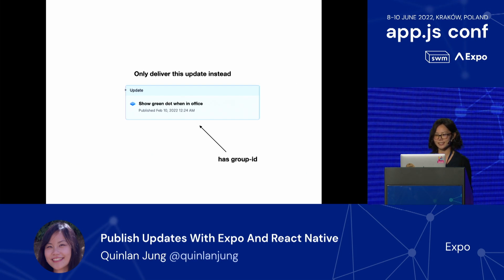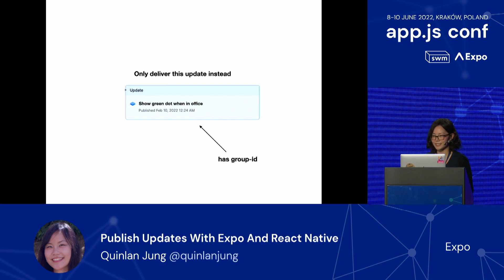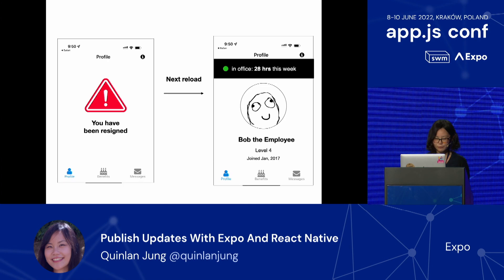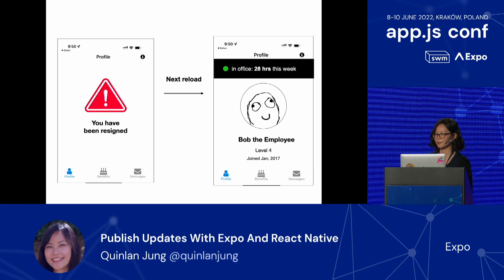You realize this is all a huge mistake and you don't want to deliver the resignation app — you really want to deliver the old green dot update. All the updates you deploy have a group ID that can be queried in our systems. If you want to redeploy a previous update, you specify the group ID and a republish flag in the command line. When this happens, users will see that instead of the resignation version, on their next reload they'll get the older publish that you previously deployed.